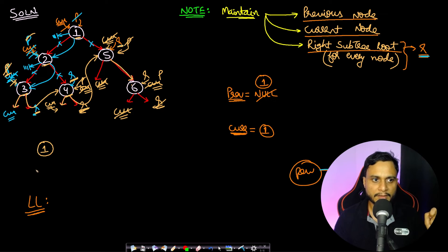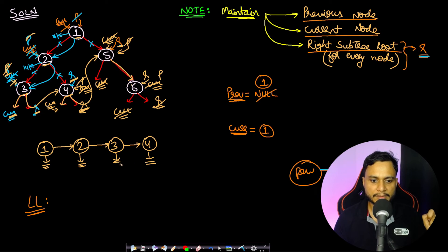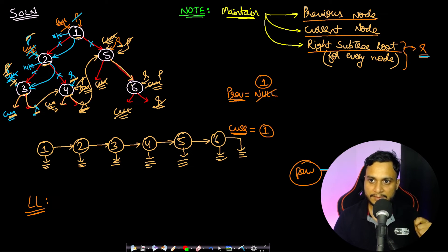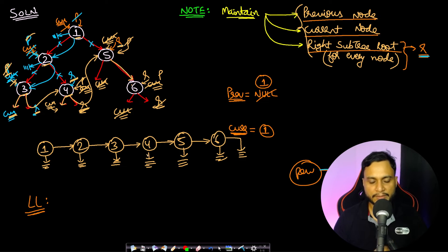At node 6: previous (5) is non-null, so right pointer already points to 6, left pointer is null. Update previous to 6, R is null, current goes to left child which is null — return, call R (null), return to 6, back to 5, back to 1. The final structure: node 1's left is null, right points to 2; 2's left is null, right points to 3; 3's left is null, right points to 4; 4's left is null, right points to 5; 5's left is null, right points to 6; 6's left and right are null.